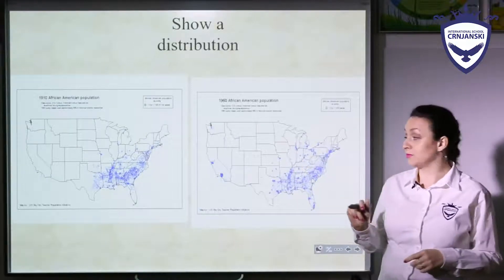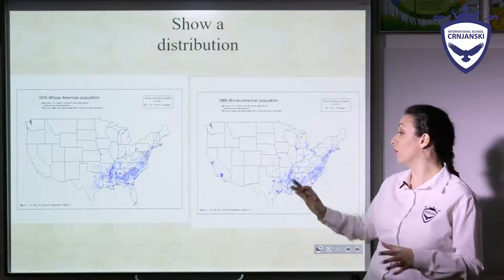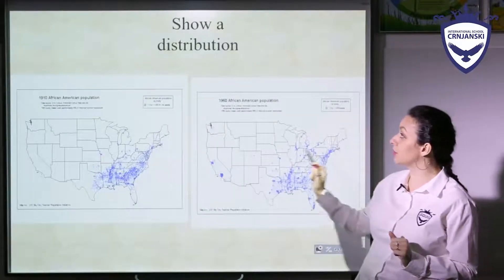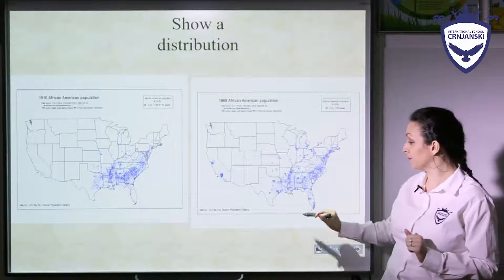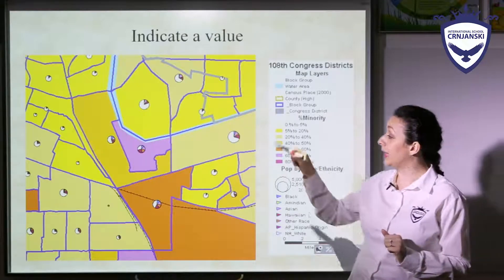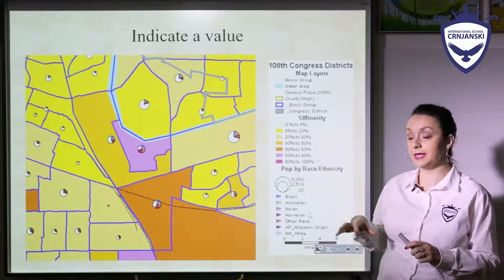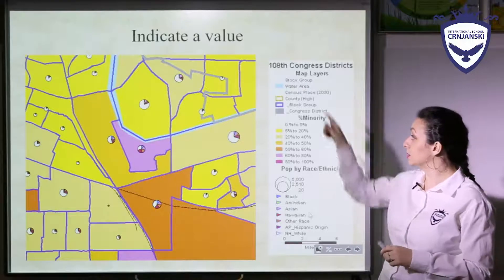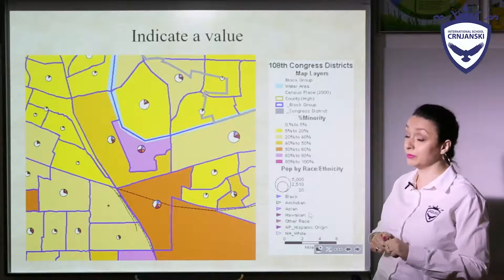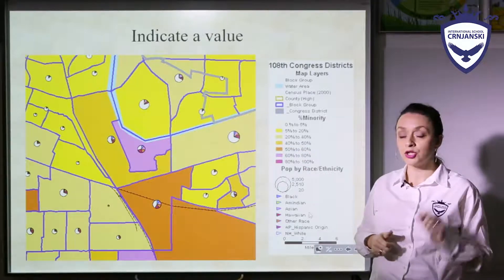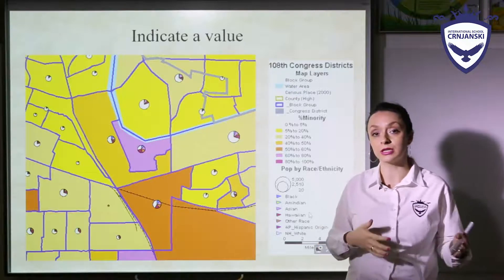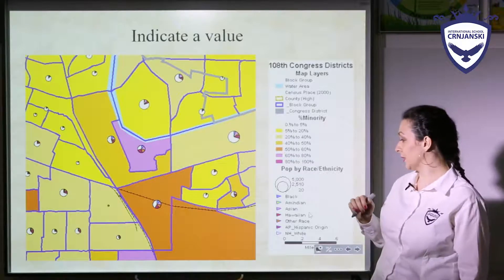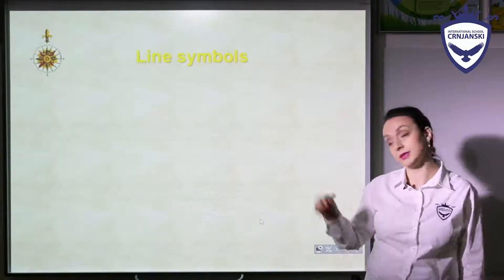Point symbols can show a distribution — you can see two maps of the same country or continent using differently colored symbols to show a different distribution of something. Or they can indicate a value, using different colors for different amounts, and bars or charts either directly on the map or next to it. You will learn about reading charts and bars and graphic representation in more detail later on.